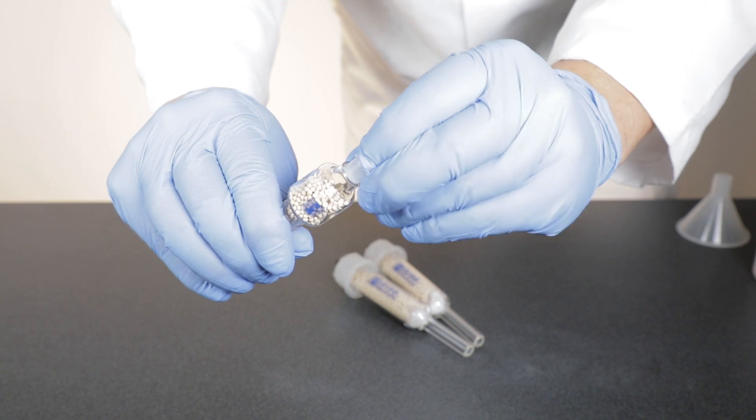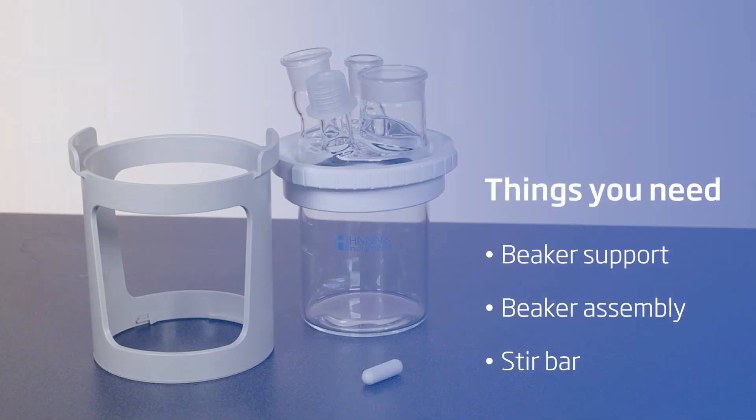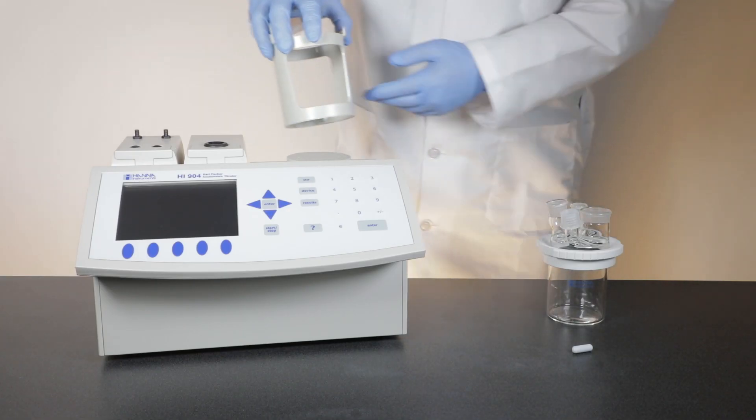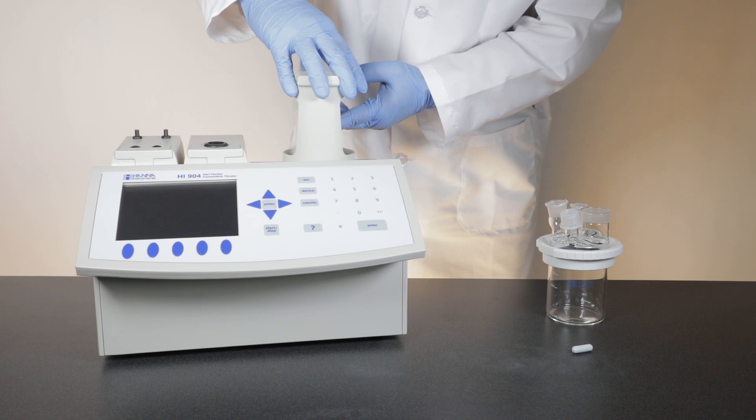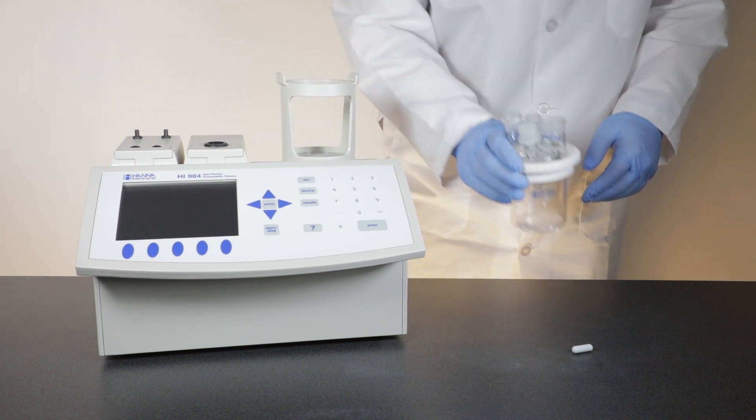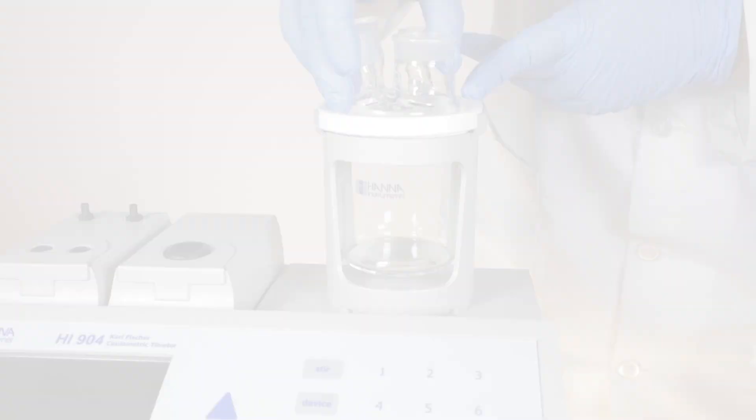Now we'll set up the beaker. You'll need the beaker support, beaker assembly, and a stir bar. First align the beaker support with the base plate and rotate clockwise. Then place the beaker onto the support and align the notches on top. Then add the stir bar.